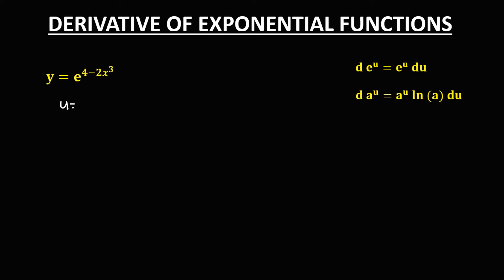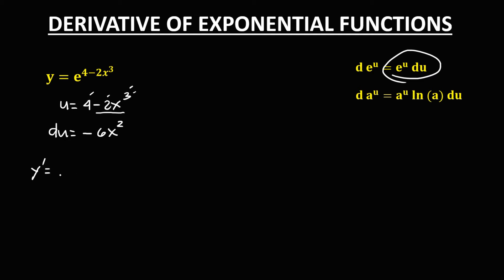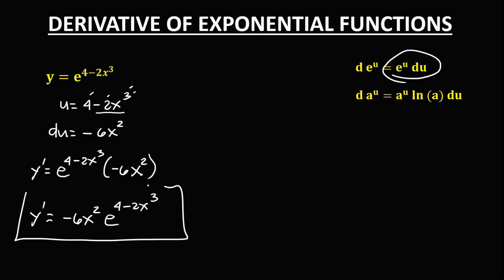Then for this given, u is equal to 4 minus 2x to the power 3, and for the derivative of u: the derivative of 4 is 0, and for the derivative of negative 2x to the power 3, we multiply 2 times 3, that's 6, then x to the power 2. To find the derivative, we have y prime equals e to the power 4 minus 2x to the power 3, times the derivative of u, so that's negative 6x to the power 2. Therefore y prime is equal to negative 6x squared times e to the power 4 minus 2x cubed. So this is now the derivative.